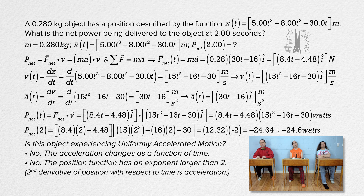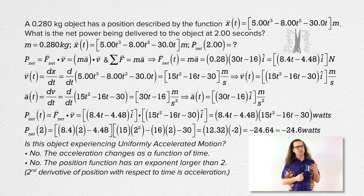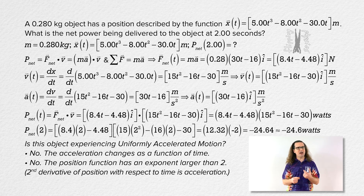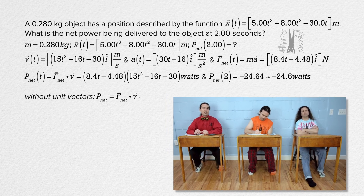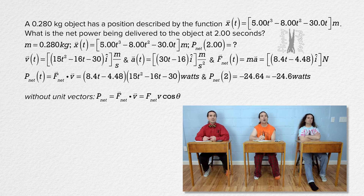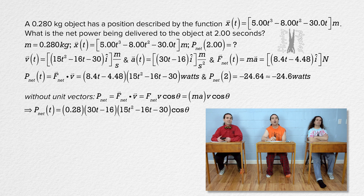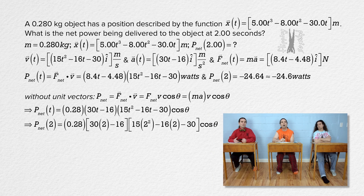Billy asks: do we have to use unit vectors, or could we do this without unit vectors? That is a fair question — you do not have to use unit vectors. Let's solve for this without unit vectors as well. Net power equals the dot product of net force and velocity, which equals net force times velocity times the cosine of theta, the angle between those two vectors. Net force equals mass times acceleration: substituting 0.280 for mass, 30t − 16 for acceleration, and 15t² − 16t − 30 for velocity, the net power at 2 seconds gives negative 24.64 cosine theta — the same number as before.